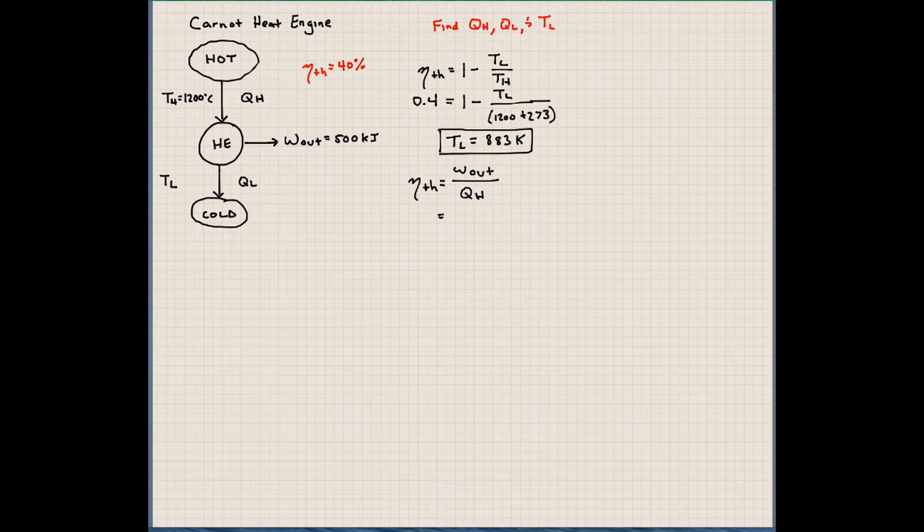So our work output of our system is 500 kilojoules. Our thermal efficiency is 0.4. And our heat transfer from our hot source to our heat engine, we can solve for that now pretty easily. And that's 1250 kilojoules. Alright.